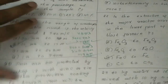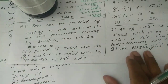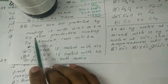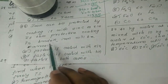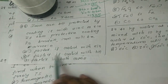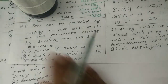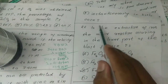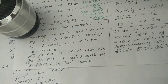Iron can be protected by coating it with zinc or tin. If the protective coating is broken, iron will corrode. Option B: faster if coated with tin. Option C: faster in both cases. Option D: instantaneously in both cases. Option B: faster if coated with tin.